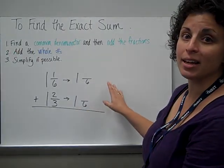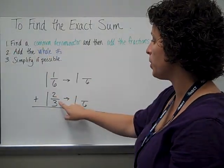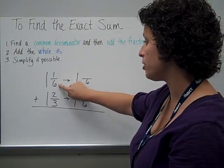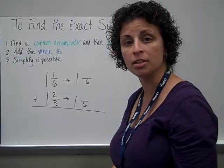To find the exact sum, we have three steps. First, we need a common denominator. If you look at the original problem, I have a denominator of 6 and a denominator of 3. That's not a common denominator. These are unlike or uncommon.